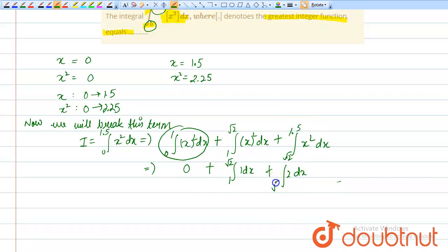Evaluating the integrals: ∫1dx from 1 to √2, plus ∫2dx from √2 to 1.5. Solving by putting the limit values: (√2 - 1) + 2(1.5 - √2).